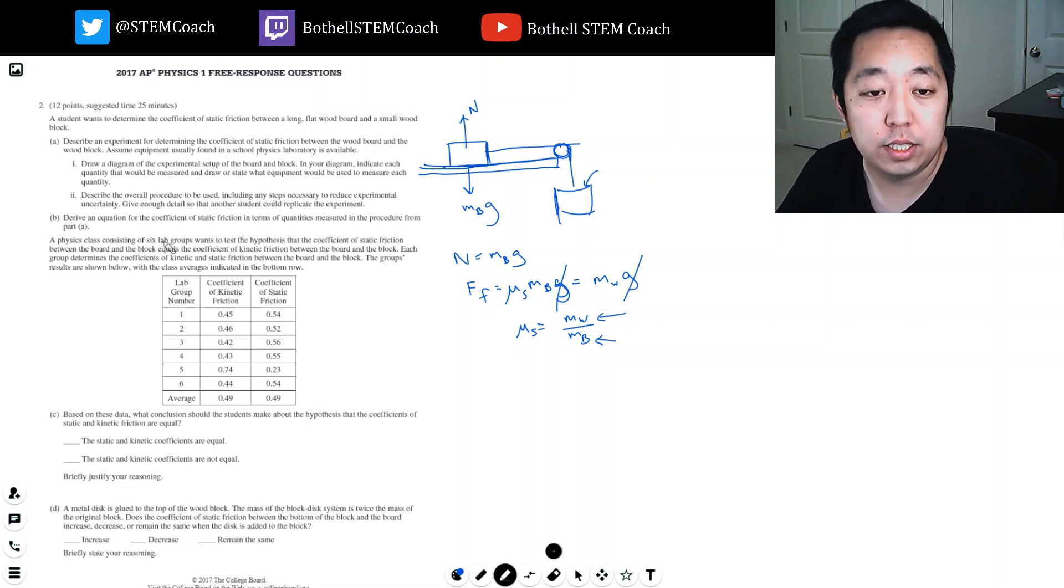Okay, so a physics class consisting of six lab groups want to test the hypothesis that the coefficient of static friction between the board and block equals the coefficient of kinetic friction. Each group determines both coefficients. The group's results are shown. Based on the data, what conclusion should the students make about the hypothesis that the coefficients are equal?